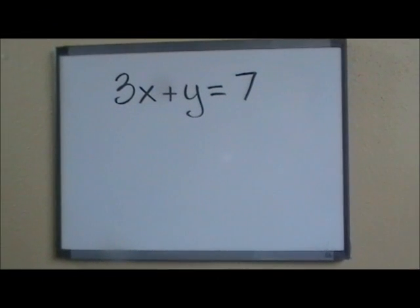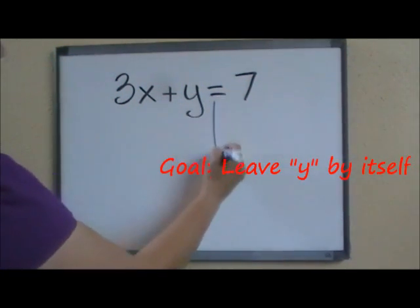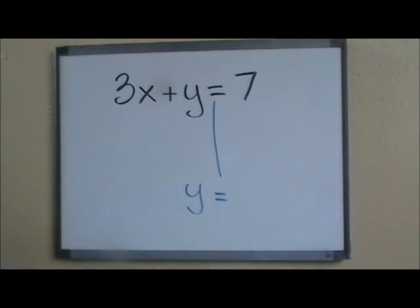The equation that we are starting with today is 3x plus y equals 7. Our goal is to leave the y by itself on one side of the equal sign, so my new equation reads y equals.